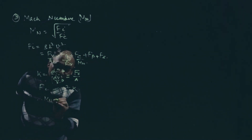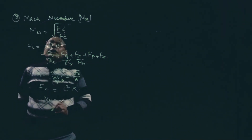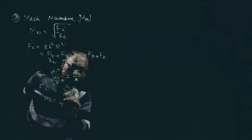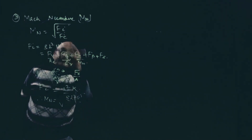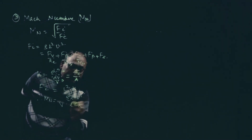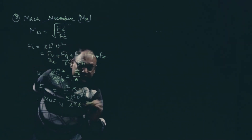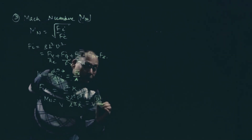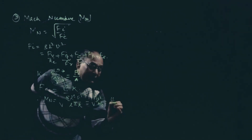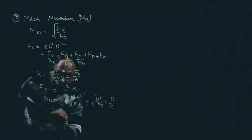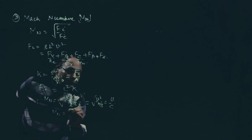Therefore, Mach number equals the square root of rho L squared V squared divided by K L squared. The L squared terms cancel, giving the square root of V squared over K divided by rho, which simplifies to V divided by the square root of K over rho. Since the square root of K over rho is the sonic velocity C, Mach number equals V by C.